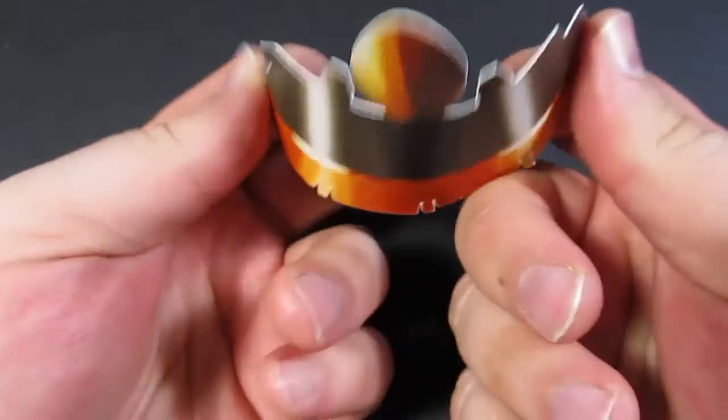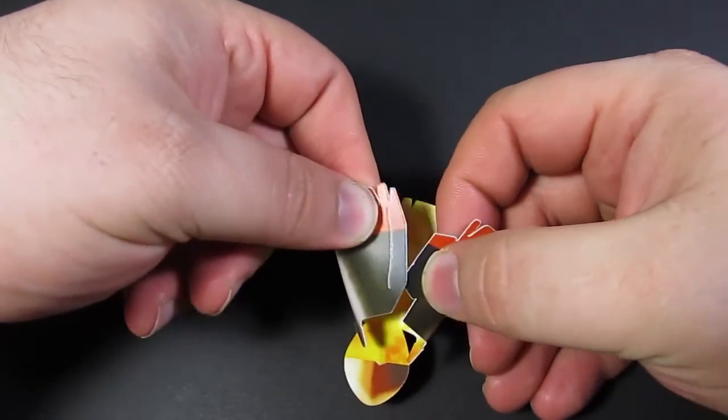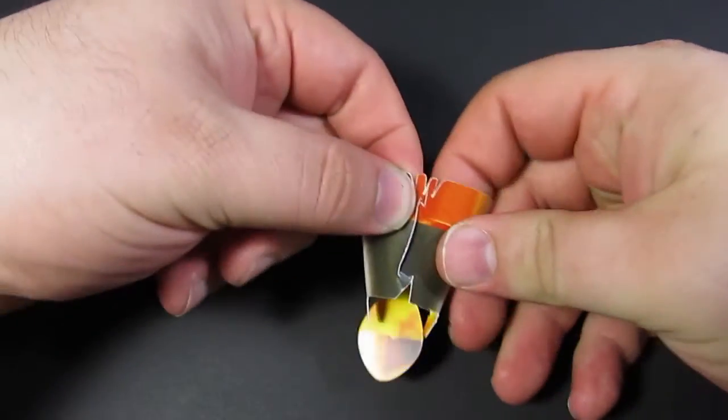We will start with Blast Zone's feet. To assemble a foot, twirl it around until this tab meets the slot and insert the two. Then squeeze the foot a little bit to give it the right shape.